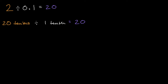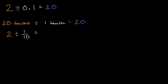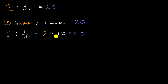Another way to approach this is to rewrite 0.1, the one tenth, as a fraction. We can rewrite this as two divided by one tenth written as a fraction. We know that dividing by a tenth is the same thing as multiplying by 10. So this equals two times 10, which is 20. It's good that we got the same answer — otherwise these would not be equivalent methods.